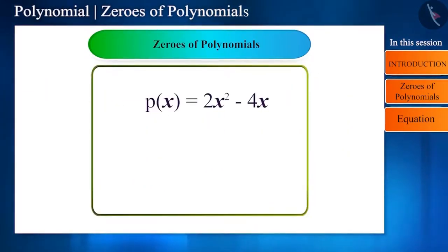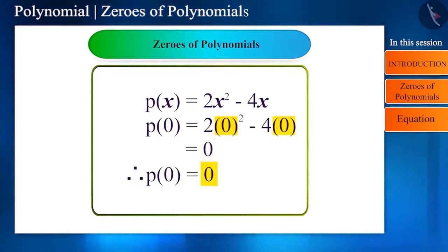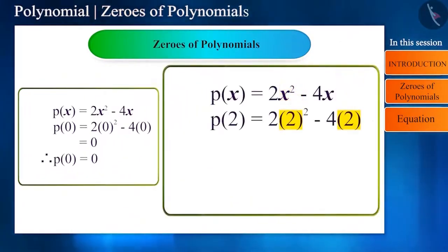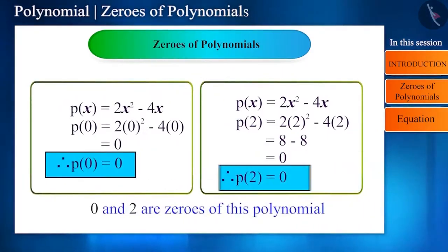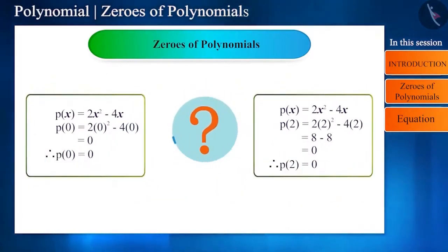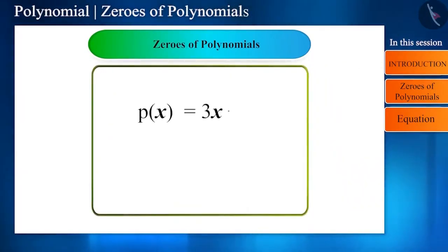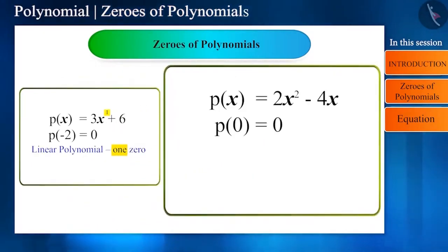Similarly, in the second polynomial, the value of polynomial becomes 0 on substituting x with 0 and 2. That is, this polynomial has two zeros. One is 0 and the other is 2. Can you find any other number besides these two numbers so that the value of this quadratic polynomial is 0? Friends, one thing to note here is, the number of zeros of polynomials does not exceed the highest power of the variable of polynomial.